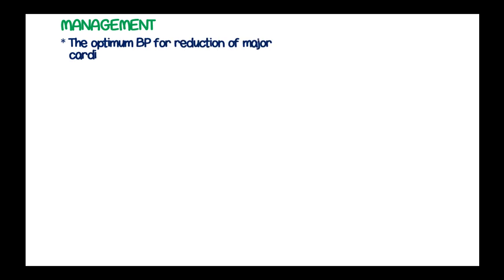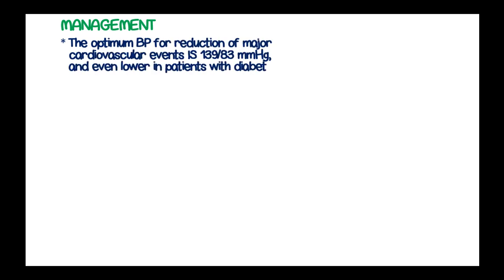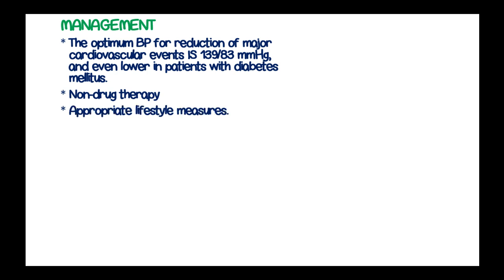In the management of hypertension, the optimum blood pressure for reduction of major cardiovascular events is 139 over 83 mmHg, and even lower in patients with diabetes mellitus. Non-drug therapy can be employed before using pharmacologic therapy.